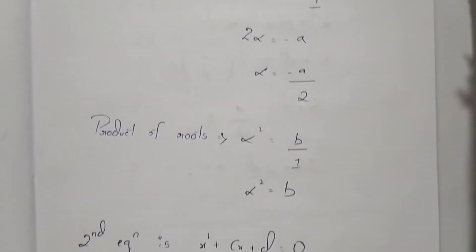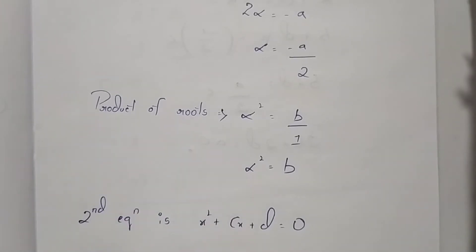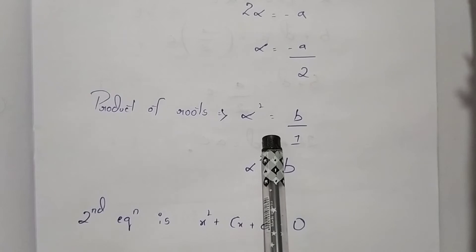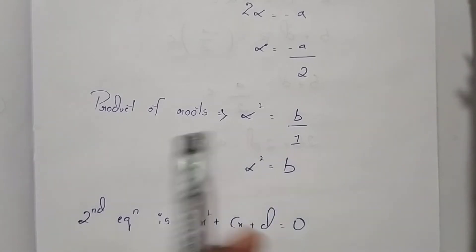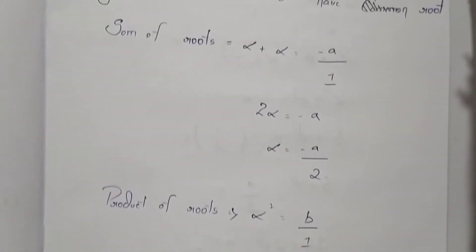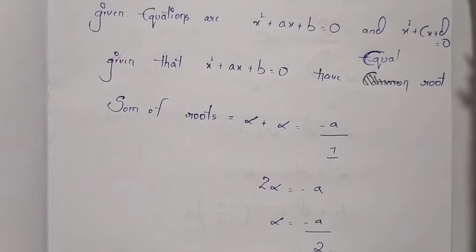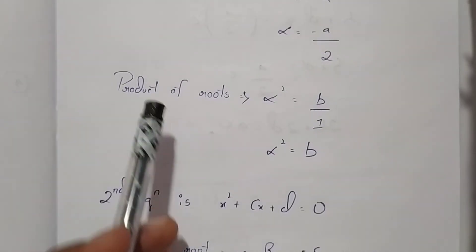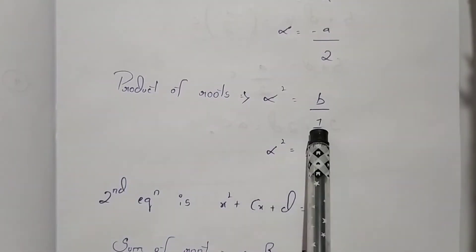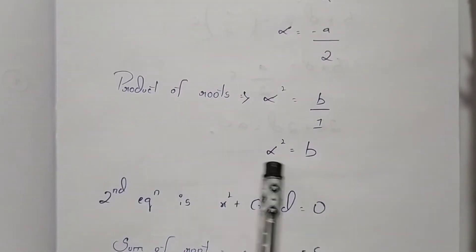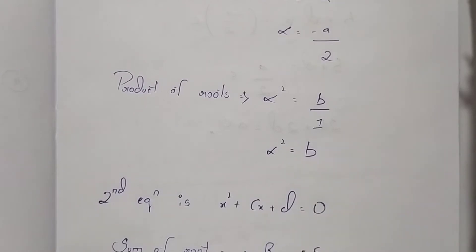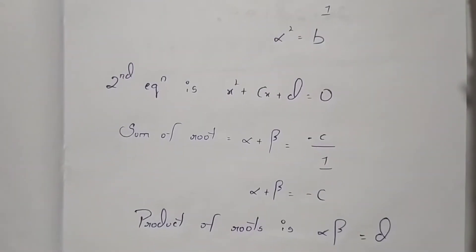Doing the product of roots, that is alpha × alpha = alpha². As we know, product of roots is c/a, but in this equation in place of c there is b and a is 1. Therefore alpha² = b.